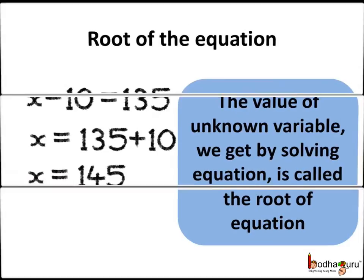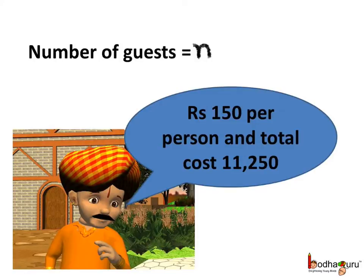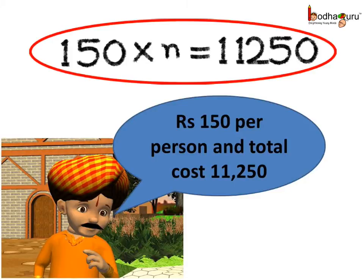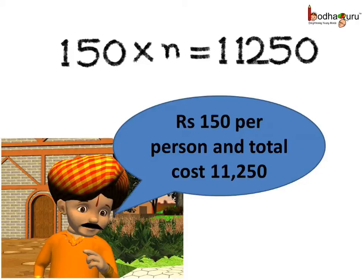Let us take more examples. For a ceremony, Manilal calculated that he required Rs. 150 as the cost of dinner per guest, and he spent Rs. 11,250 for arranging food for all of the guests. So, how many guests attended the party? Say n number of guests were there. So, 150 multiplied by the number of guests n is equal to 11,250. We need to find the value of n, that is the number of guests.